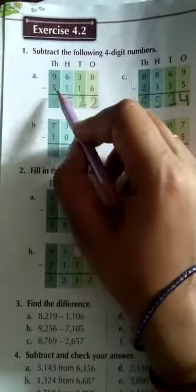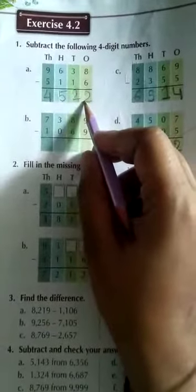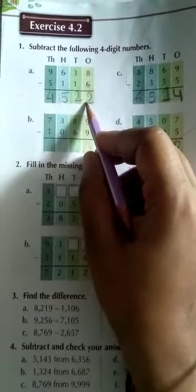And you are given 9, so 9 minus 5 how much students? 9 minus 5 is 4, so the answer will be 4, 5, 2, 2. Is it clear?